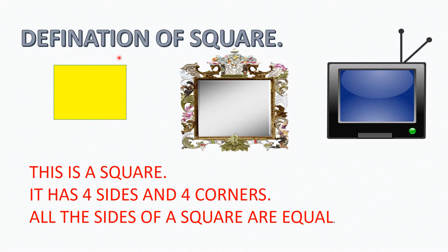Definition of square. This is a square. It has four sides and four corners. All the sides of a square are equal.